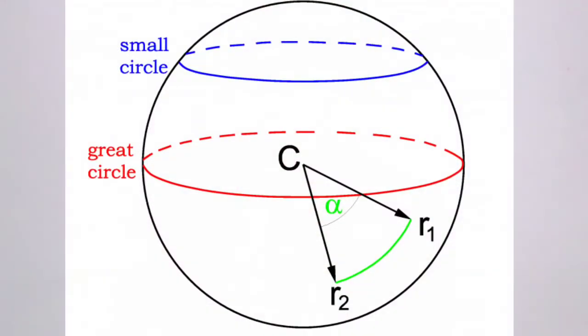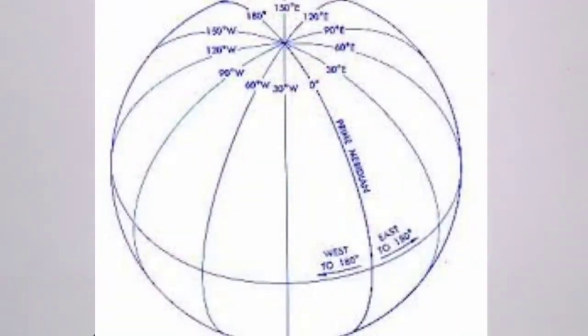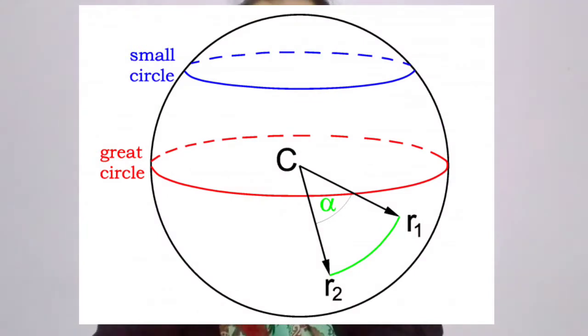The equator is known as a great circle, and all opposite meridians also form great circles. For example, the zero meridian and 180 degree meridian are opposite meridians that together form a great circle. The great circle is used to find the minimum distance between two places on the surface of the Earth.